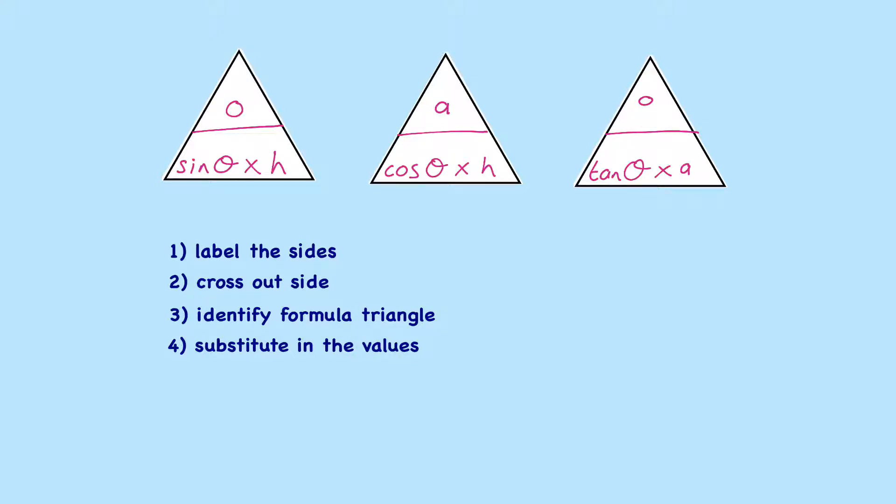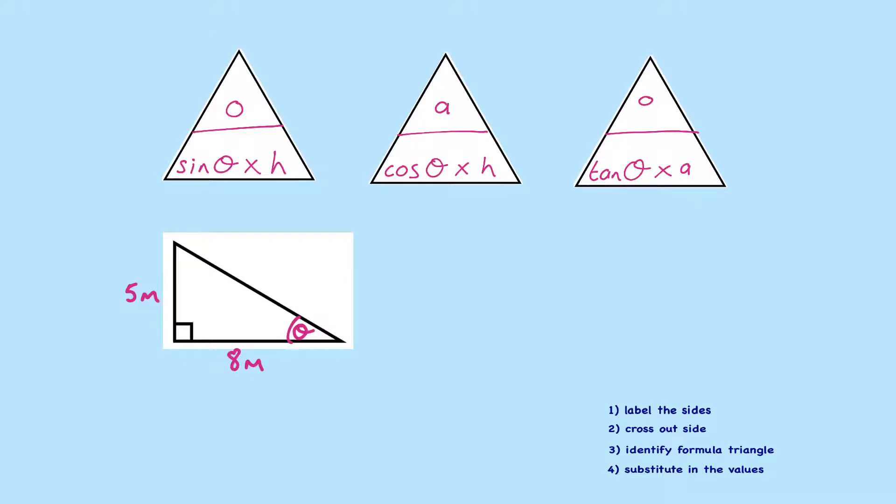Let's have a look at an example. So we'll go through our steps. Step one, label the sides. Step two, we'll cross out the side we don't want, which is the H. Then identify the formula triangle, which is, of course, we need O and A, is the TAN triangle.